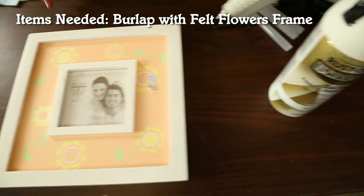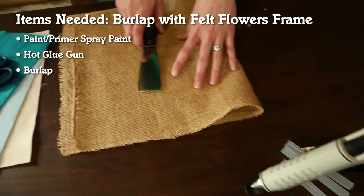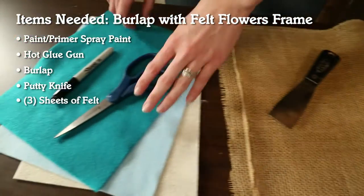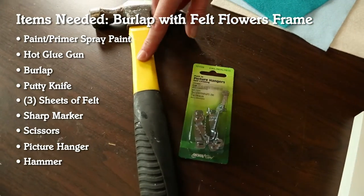For our first picture frame we'll use white spray paint, hot glue and a glue gun, burlap with a putty knife, three different colors of felt with a marker and scissors, and last we'll install a picture hanger with a hammer.